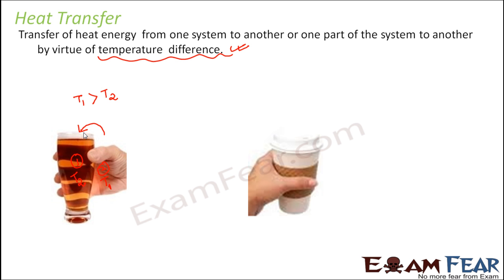Similarly, when you touch a hot glass of coffee, your hand becomes hot — because heat transfer takes place from the cup to your hand, as the cup is at a higher temperature than your hand. If you hold a glass at room temperature — neither cold nor hot — your hand temperature remains the same, because both objects are at the same temperature and no heat transfer takes place.